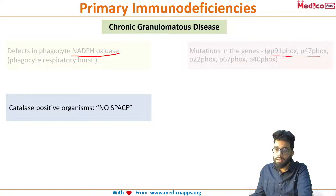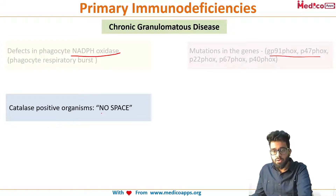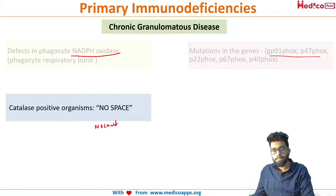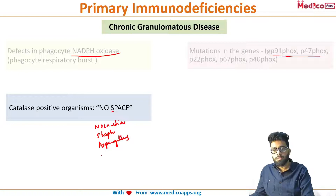There is a mnemonic for catalase-positive organisms in CGD: NO SPACE. N is for Nocardia, S for Staph, A for Aspergillus, P for Pseudomonas, and E for E. coli. These are the common catalase-producing organisms. So as shown earlier, if you have a catalase-positive organism, that infection is going to flourish in this particular disorder.